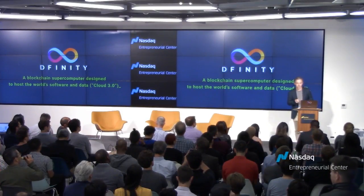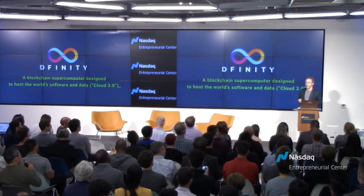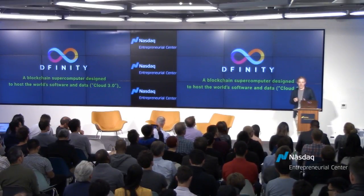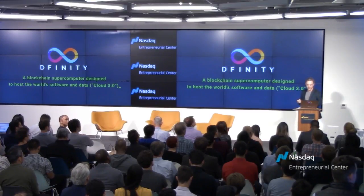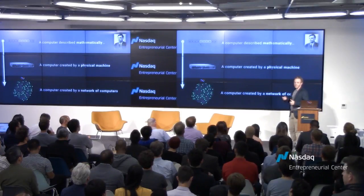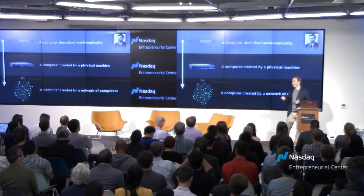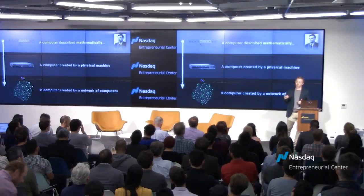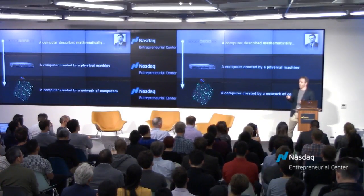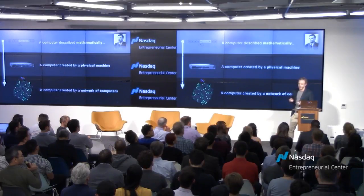DFINITY is a blockchain supercomputer that's designed to host the world's software and data — it's a kind of open public cloud 3.0. Mid-20th century, computers had already been described mathematically and it wasn't long before people started making physical computers. An early example would be the machine at Bletchley Park in the UK that decrypted German communications during the Second World War.